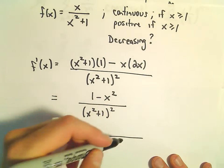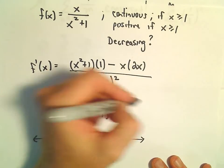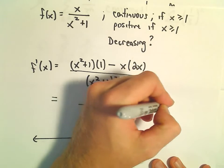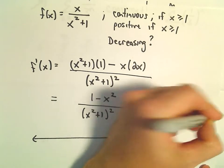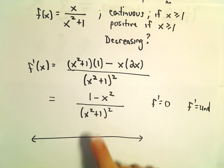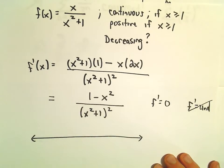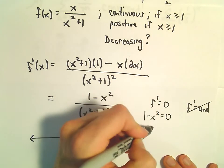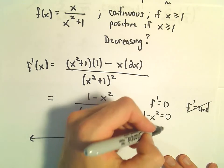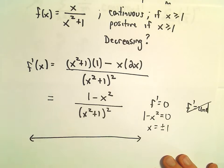If we find the critical points for this by setting the derivative equal to 0, there's nothing that makes the derivative undefined in this case because there's nothing that's going to make the denominator 0. If we set the numerator equal to 0, we can add the x squared, take the square root, we'll get x equals plus and minus 1.